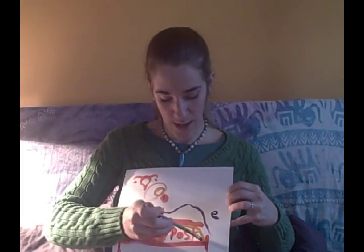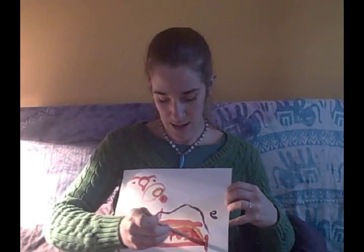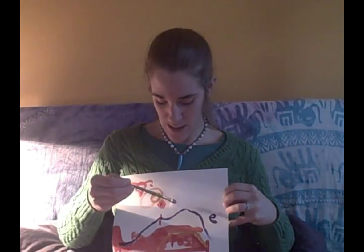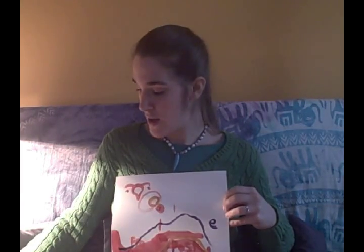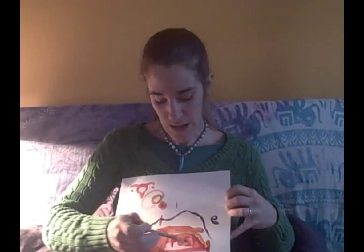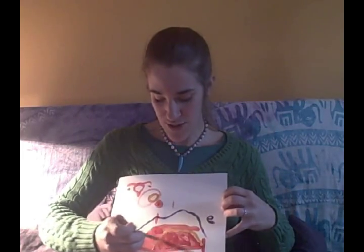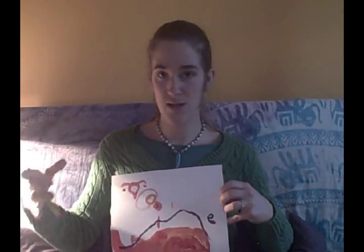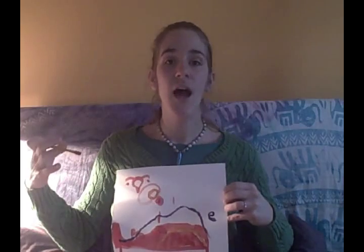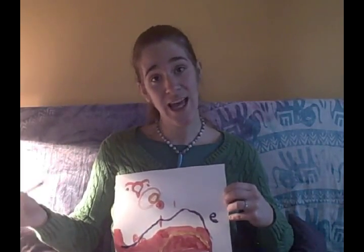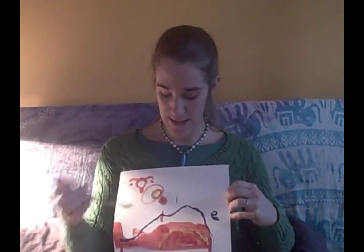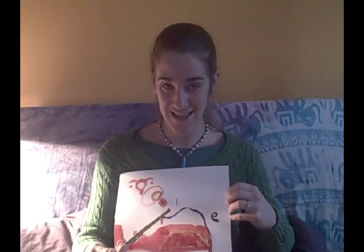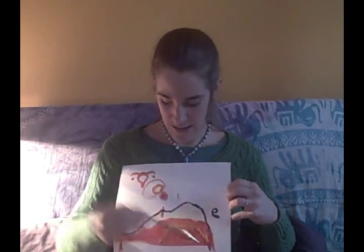Progesterone's job is to keep the uterine lining very lush and thick, just in case your egg was fertilized. The egg only has really a few days to be fertilized and be viable. If it is fertilized, progesterone keeps your uterine lining nourishing and warm — creating a little universe within your womb so that the egg can implant and grow. But if it hasn't been fertilized, you bleed again and the whole cycle starts over.